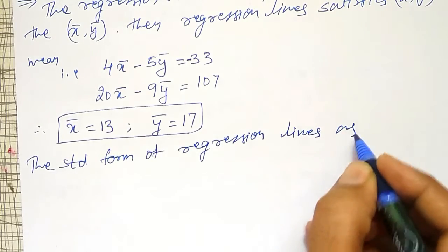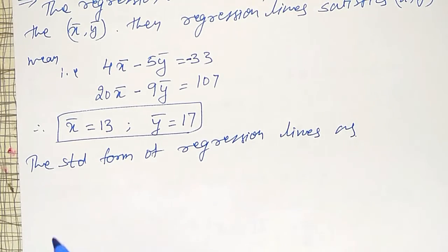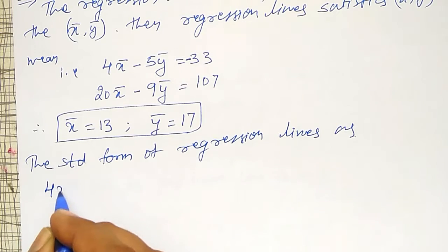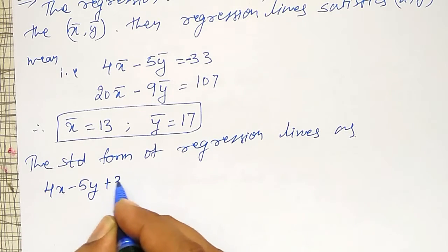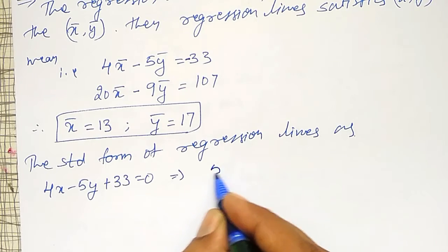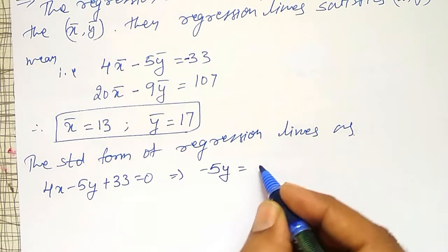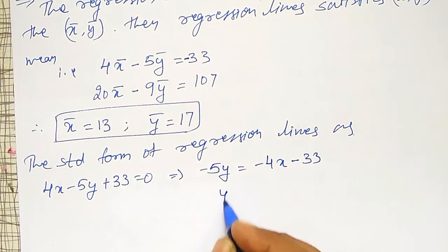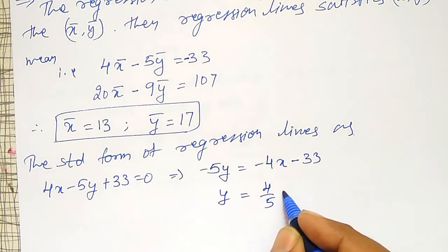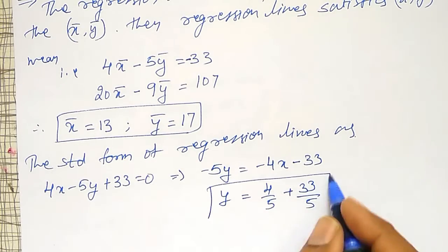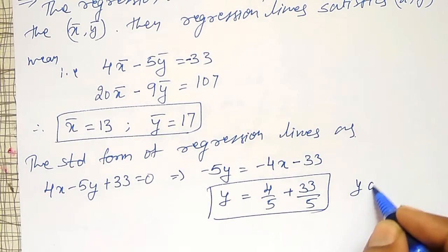The standard form of regression lines - first equation I will write as y equal to, the same given equation 4x - 5y + 33 = 0. For this one, y equal to I have to write. Therefore -5y = -4x - 33, or just y = 4/5x + 33/5. This is the regression line y on x.